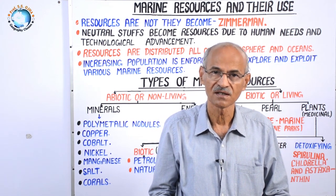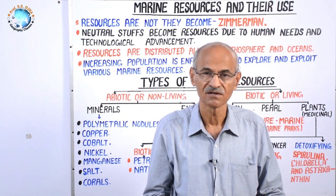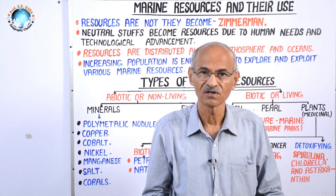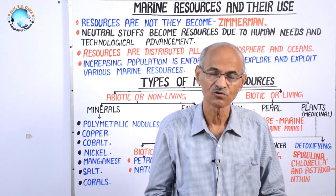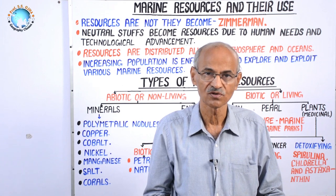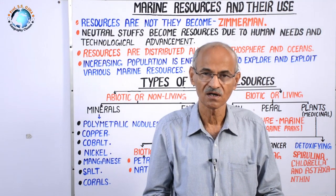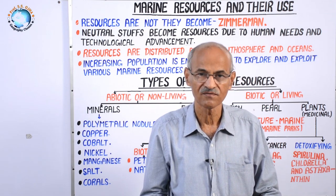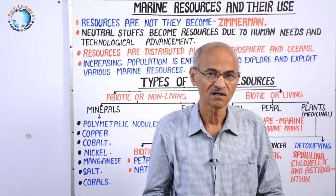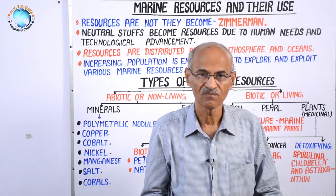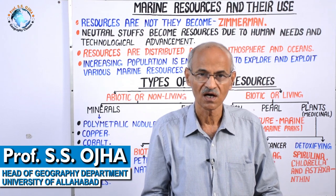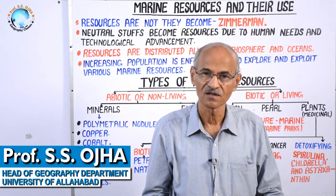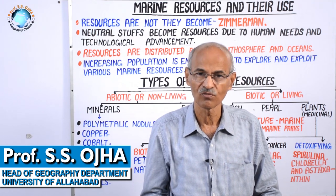There are a number of things, biotic and abiotic, in the ocean which are of use for mankind, and these are called resources. There is a difference between resources and neutral stuff. All the things found on Earth in the environment are neutral stuff if they are not of use — if they have not been identified by man or they are not in use. These neutral steps become resources as identified by man for human use. Thus, resources are all those things which are of human use.